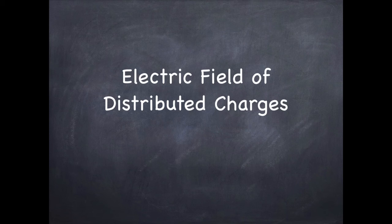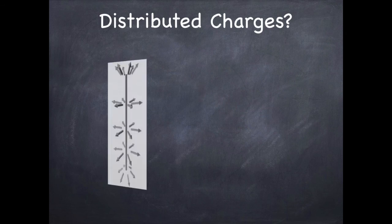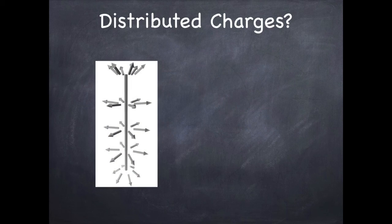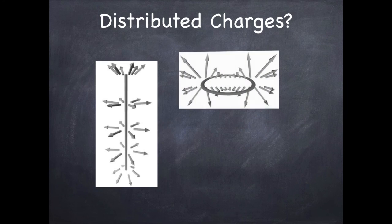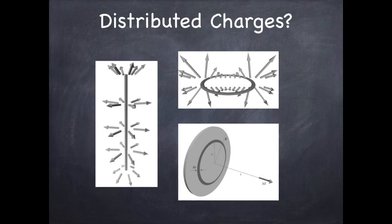So what is a distributed charge anyway? The idea is someone's taken a can of charge paint for example and painted some surface, or distributed the charge along some shape — a line, a ring, a disc, or later we'll see you can even distribute charge throughout a volume like a sphere or a block.